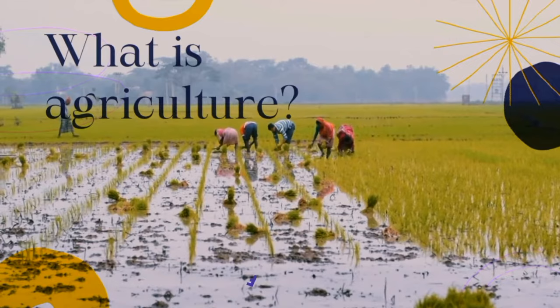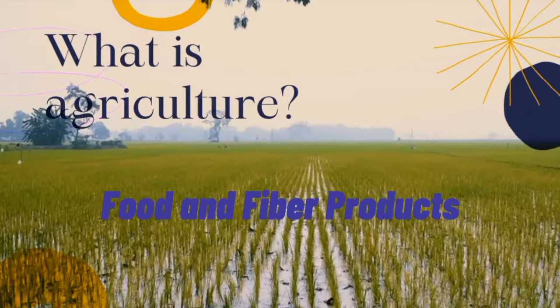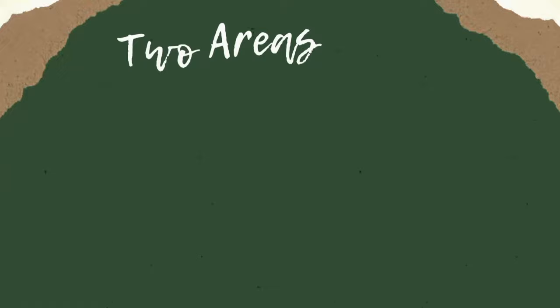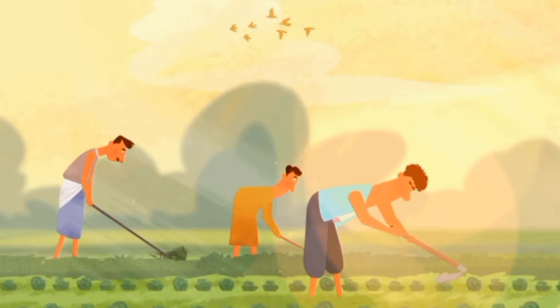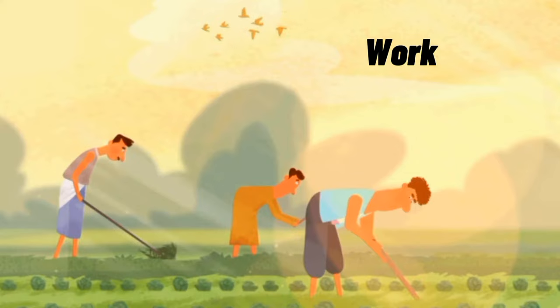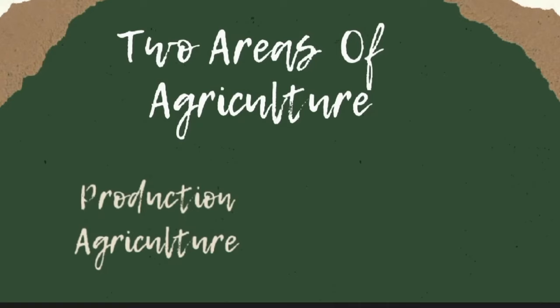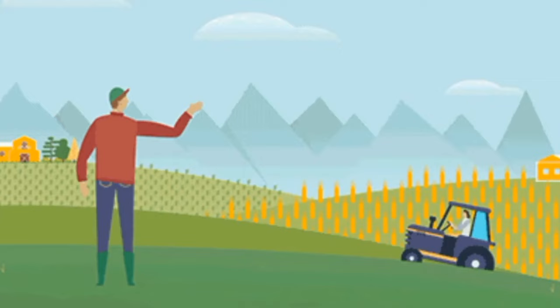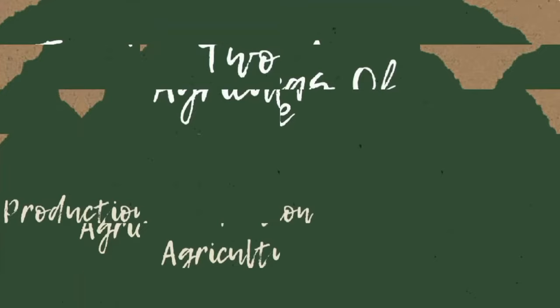Today we will talk about the importance of agriculture. First, we will define agriculture. Agriculture is the production and marketing of food and fiber products, crops and animals. There are two areas of agriculture: the first is production agriculture, which is work done on the farm; the second is agribusiness, which is work done off the farm.